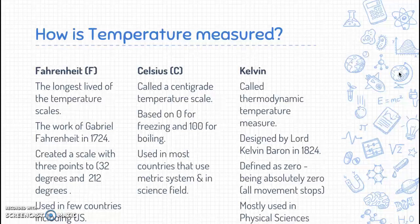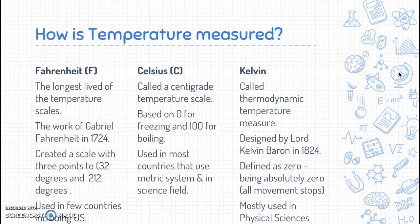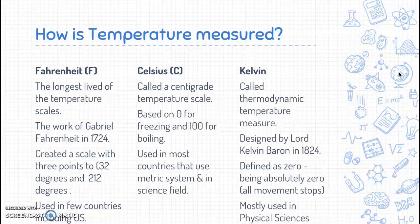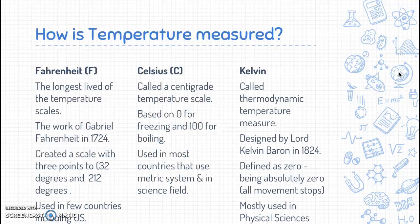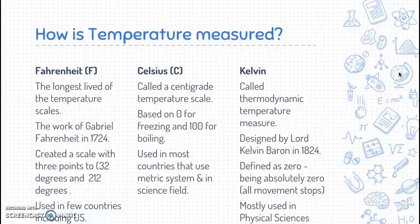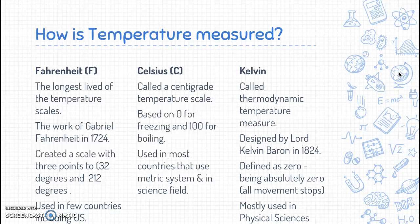There are three scales that do this. The longest lived of the temperature scales is Fahrenheit. It was created by Gabriel Fahrenheit in 1724. He created a scale with three fixed points, two of which we still use today. He found the normal freezing point of water is at 32 degrees and the boiling point is at 212. This is only used in a few countries today, including the US.